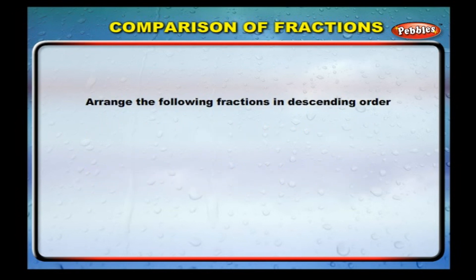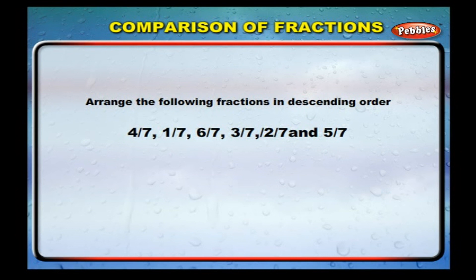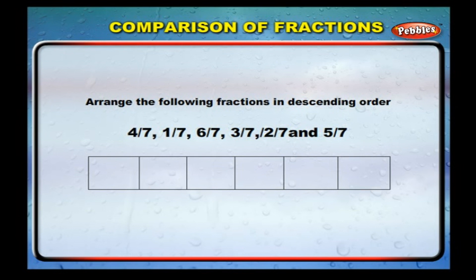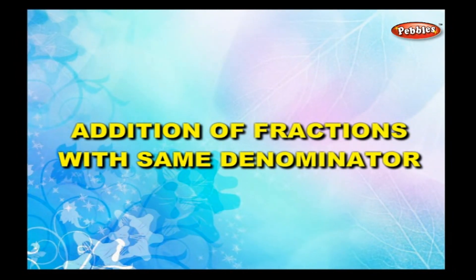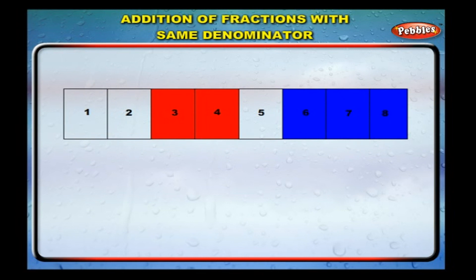Arrange the following fractions in descending order. The given fractions are 4/7, 1/7, 6/7, 3/7, 2/7, and 5/7. Let us arrange them from the greater number to the smaller number. As the denominators are all the same, compare the numerators alone. The greatest number is 6, so 6/7 is the greatest fraction. Next is 5/7, then 4/7, then 3/7, then 2/7, and finally 1/7.